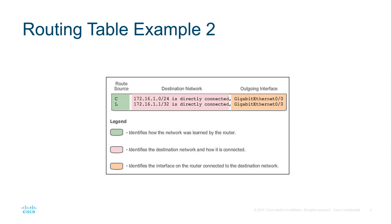Similar but slightly different. C is always going to be there if they're directly connected and have an IP address. L is local route, has to have an IP address and is active.